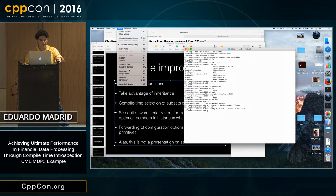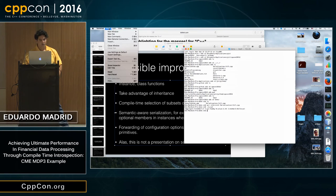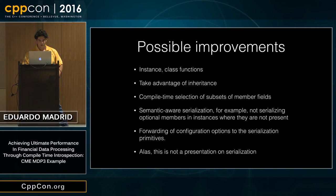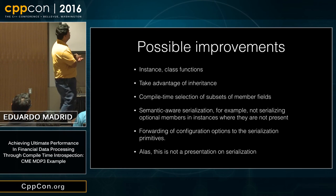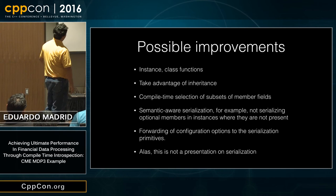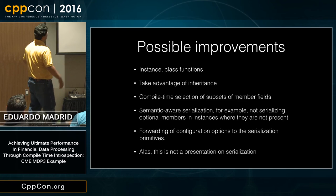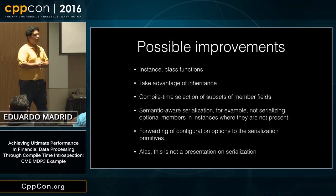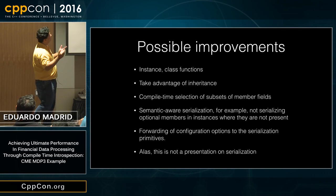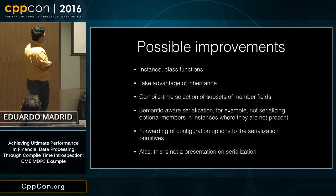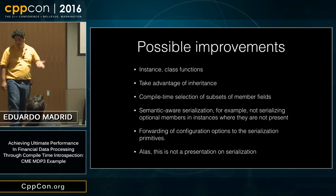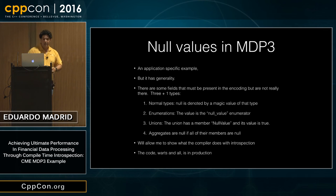There are many ways we can improve this code. We can do inspection on instance and class functions, take advantage of inheritance, do compile-time selections of subsets of members, do semantics-aware serialization, and forward configuration options to serialization primitives. But we have to skip ahead because I want to show you three other examples.